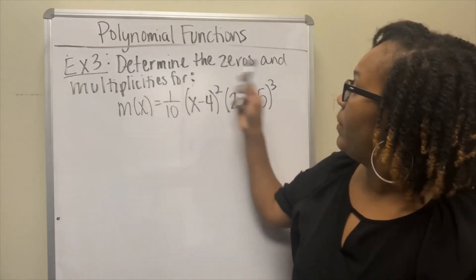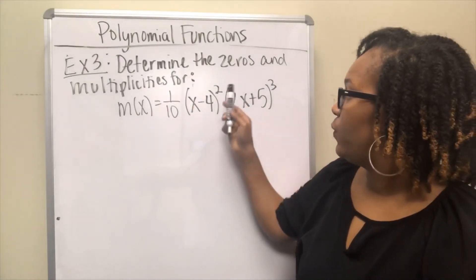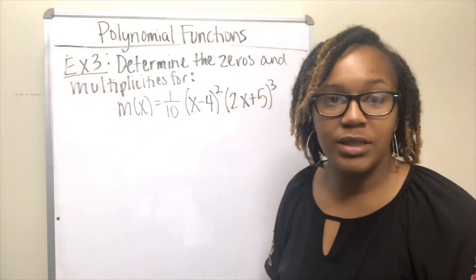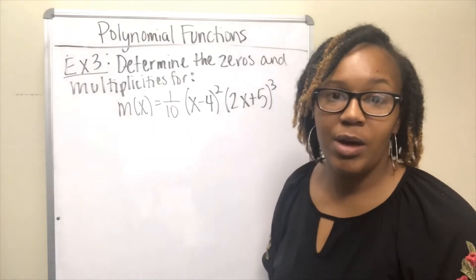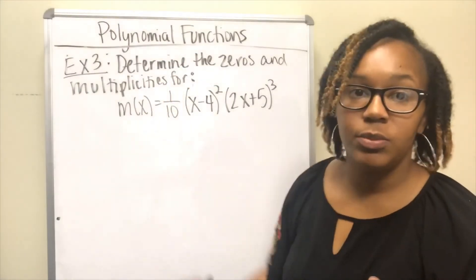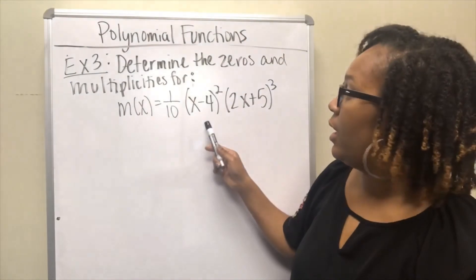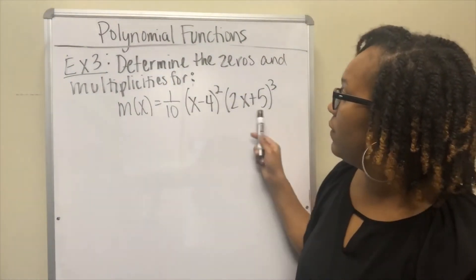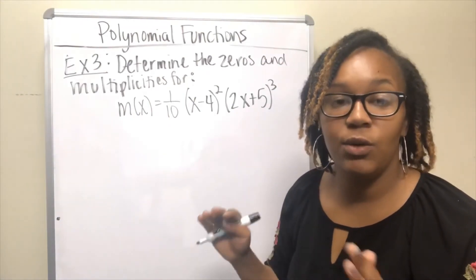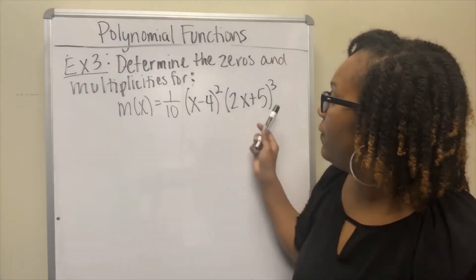For Example 3, we want to determine the zeros and multiplicities of m(x) = (1/10)(x - 4)²(2x + 5)³. This function is already given in factor form, unlike the last example where we had to factor it ourselves. We replace m(x) with zero and set each factor containing a variable equal to zero.